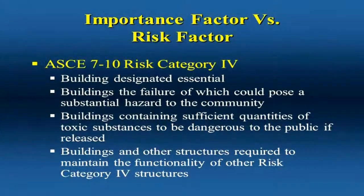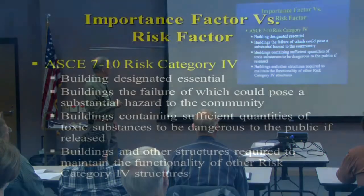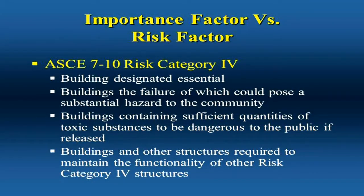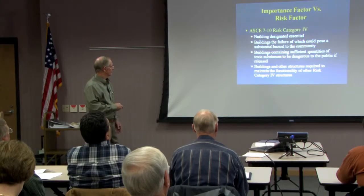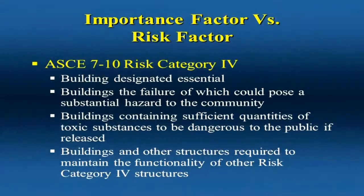Buildings that store toxic or explosive substances of sufficient quantity to pose a threat to the public also fall into category 3. Category 4 are essential buildings — whatever designated essential buildings are — buildings where failure could pose a substantial hazard to the community, those containing sufficient quantities of toxic substances, and structures required to maintain the functionality of other risk category 4 structures.